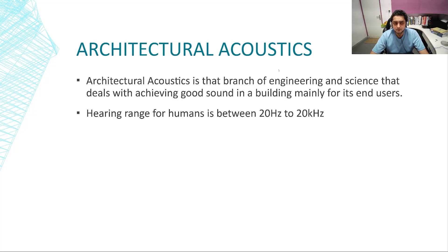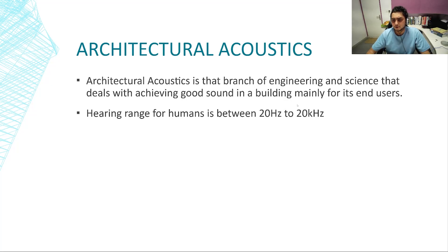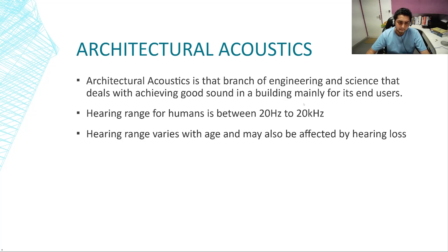The end users are mostly humans, though it could also include some pets and animals. The hearing range of humans is between 20 hertz and 20 kilohertz. I am going to explain frequency in the next few slides, but just keep in mind that human hearing range is between 20 hertz to 20 kilohertz. This is true for young healthy human beings, but not for people who have aged or those who have had noise-induced hearing loss. The hearing range varies with age and may also be affected by noise-induced hearing loss or other forms of hearing loss.